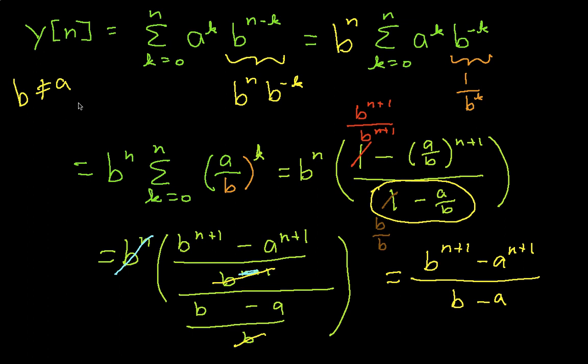But in the case where b is equal to a, then we'll have to take a slightly different approach because if we have b equal to a, our formula here doesn't work because we end up with 1 minus 1. And so that's just not going to work. We also end up on the top with 1 minus 1.